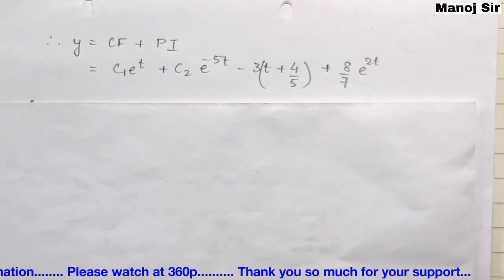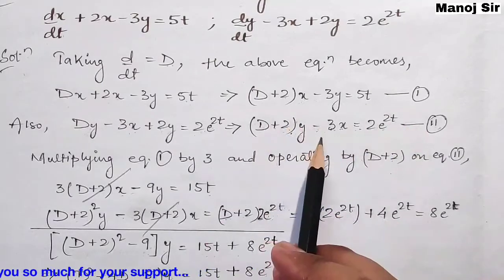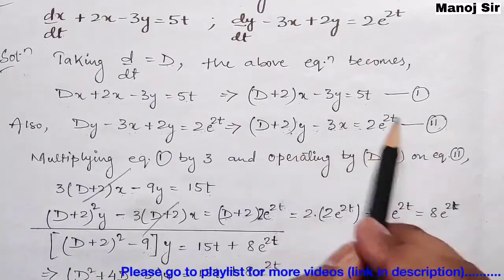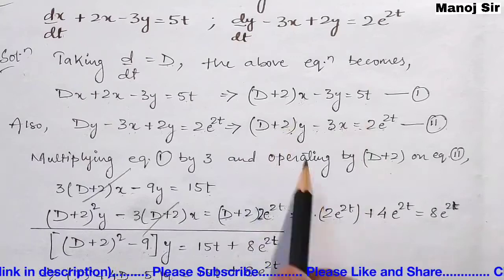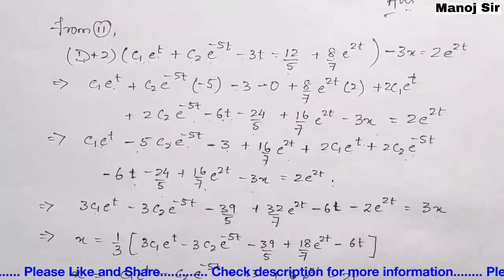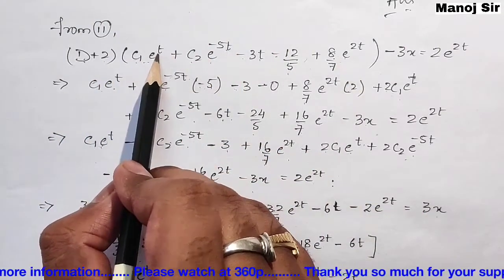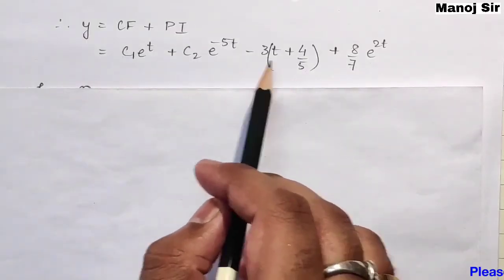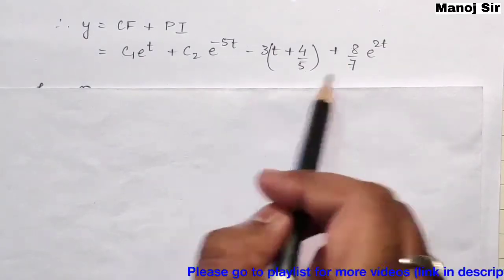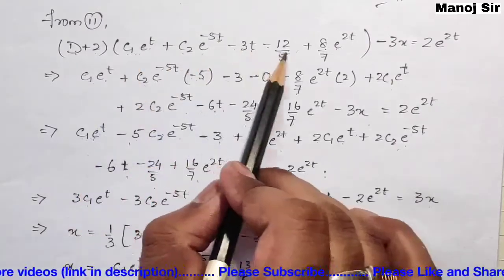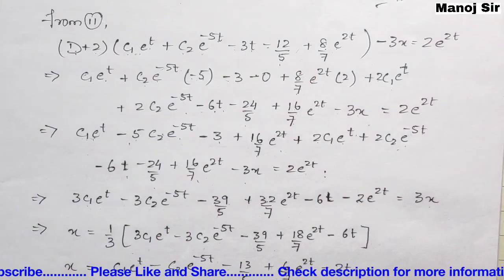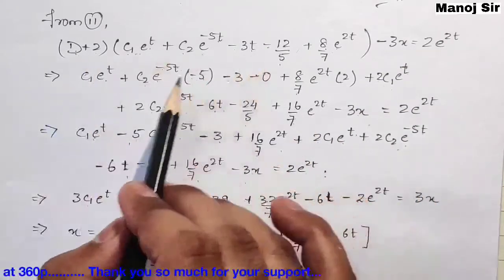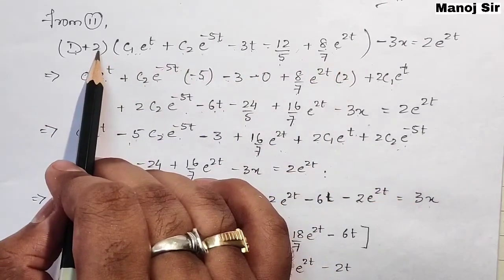To find x, we use equation 2: (D+2)y − 3x = 2e^(2t), since it gives us −3x directly, making it easier. We apply (D+2) to the full expression for y — differentiating all five terms and adding 2 times all five terms.